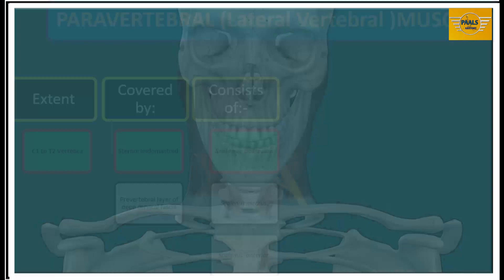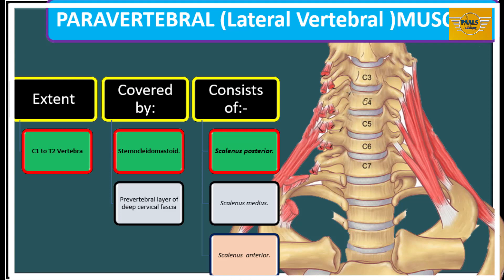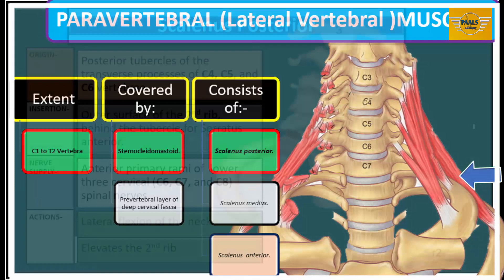We will now consider the paravertebral region — the region of the neck immediately lateral to the cervical vertebra. The muscles in this region are called paravertebral muscles or lateral vertebral muscles. This region extends from the first cervical vertebra down to the upper two ribs. It lies under cover of the sternocleidomastoid muscle, and the muscles are covered by the pre-vertebral layer of the deep cervical fascia. Their innervation is from the anterior rami of the cervical spinal nerves. The paravertebral muscles are: scalenus anterior, scalenus medius, and scalenus posterior.